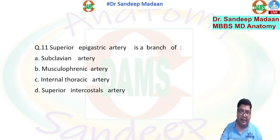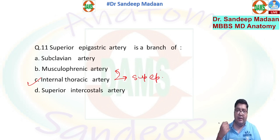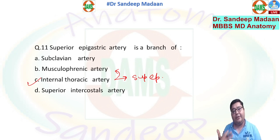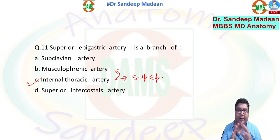The superior epigastric artery is a branch of the internal thoracic artery. The internal thoracic artery gives two branches: one is the musculophrenic and the other is the superior epigastric artery. The musculophrenic artery gives branches in the intercostal spaces, while the superior epigastric artery enters the rectus sheath where it anastomoses with the inferior epigastric artery.